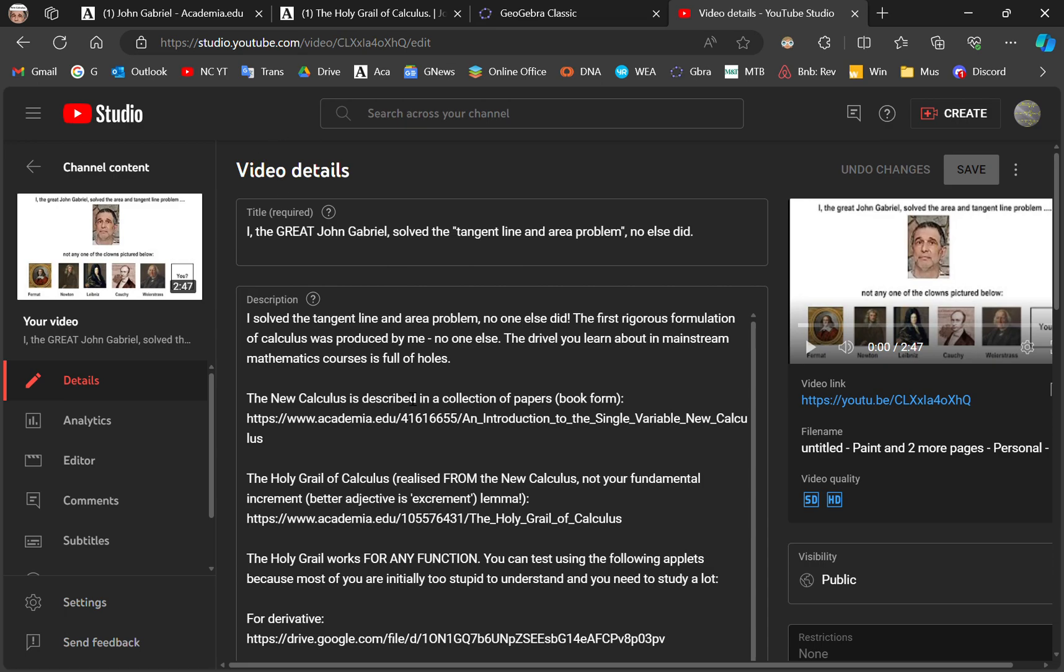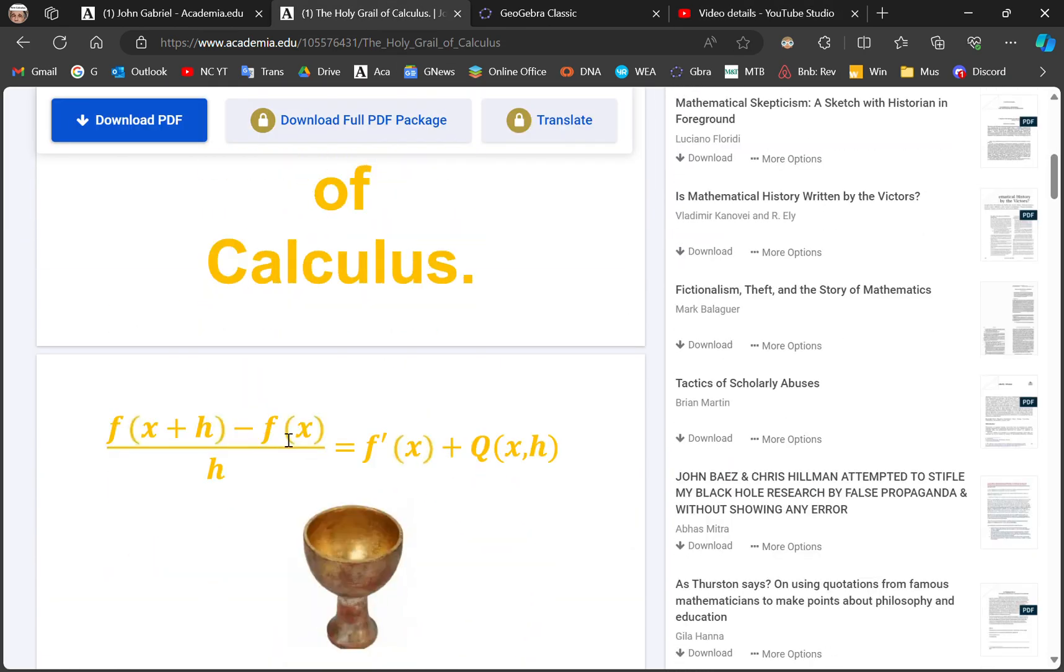Greetings and welcome to my new calculus channel. In my last video I talked about who solved the tangent line and area problem. It wasn't Newton, it wasn't Leibniz, it wasn't Fermat, or Cauchy, or Weierstrass, or any of those academics who came after Newton and Leibniz. It was I. I solved the tangent line and area problem through the holy grail of calculus.